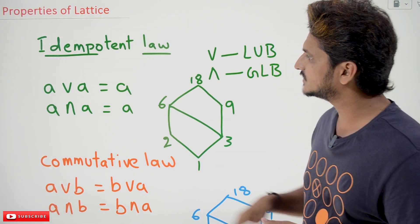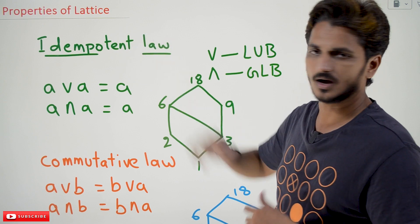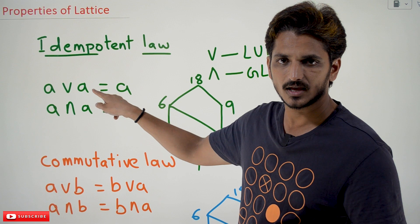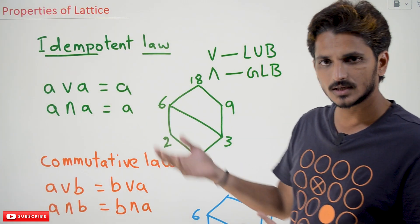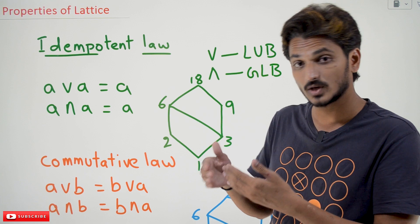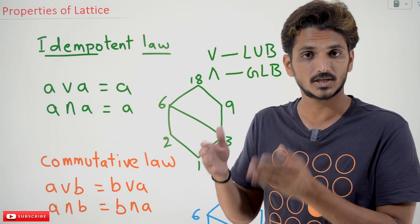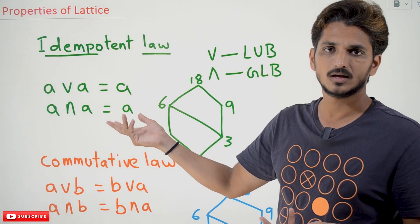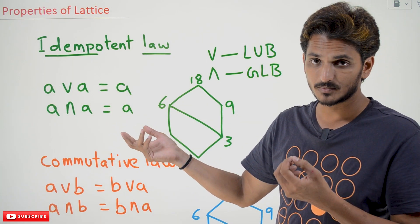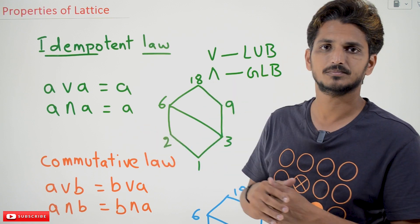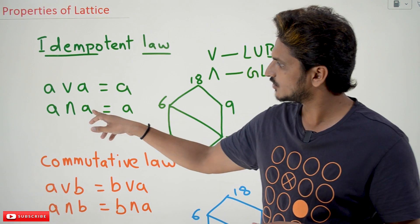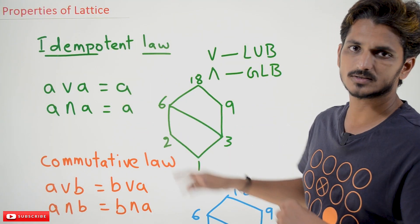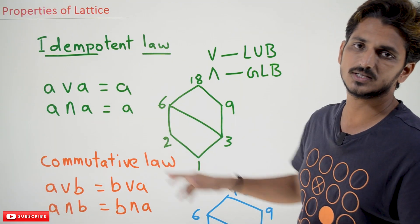Now coming to the properties. The first one is the idempotent law. A least upper bound with A equals A. Before lattice, we check for a poset — a poset means it is following the reflexive property, meaning A relates with A. You are going to find the least upper bound for the same elements, which is the same. Similarly, A greatest lower bound of A is equal to A. So idempotent law says that A greatest lower bound A equals the same element.